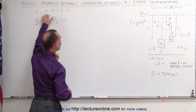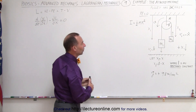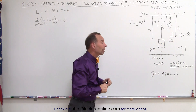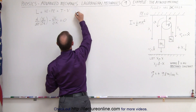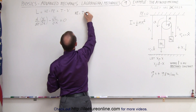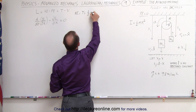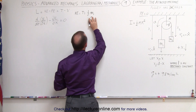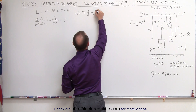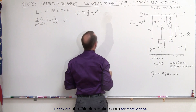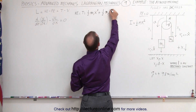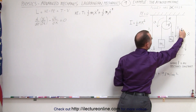We need to find the kinetic energy of the system, which means both m1 and m2 have kinetic energy, but the disk will have kinetic energy as well. The kinetic energy, which can be written as T, is equal to one-half the mass m1 times its velocity squared — that would be x-dot squared — plus one-half m2 x-dot squared, even though this is in the opposite direction.